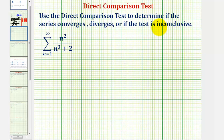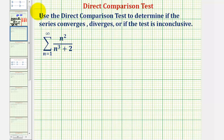We want to use the direct comparison test to determine if the infinite series converges, diverges, or if the test is inconclusive. This is almost like our last example except now in our denominator we have a plus two rather than minus two. So the first thing we want to do is determine what series we want to compare this series to.